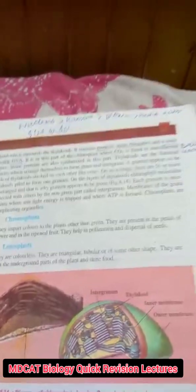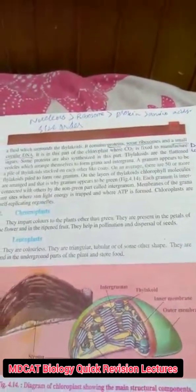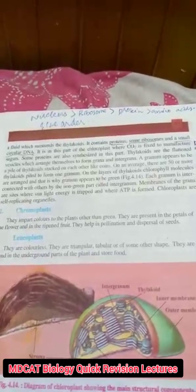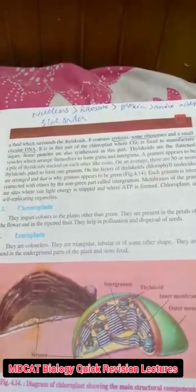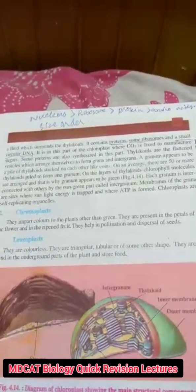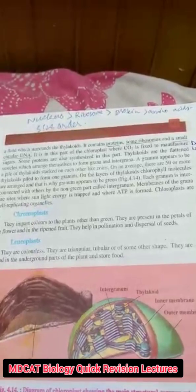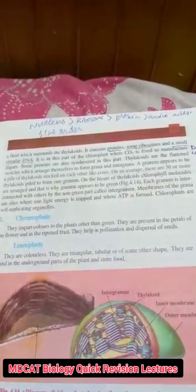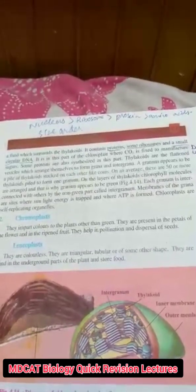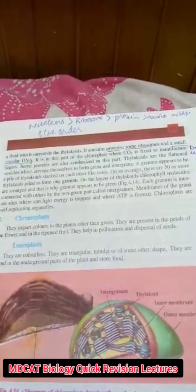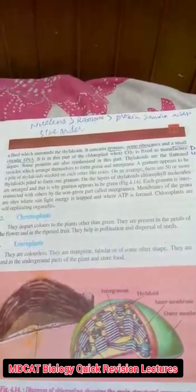Carbon dioxide is fixed to manufacture sugars inside the chloroplast. Each granum is interconnected to the other via a non-green region called the intergranal region. The membranes of the grana are the sites where sunlight energy is trapped and where ATP is formed.